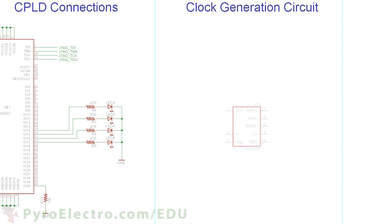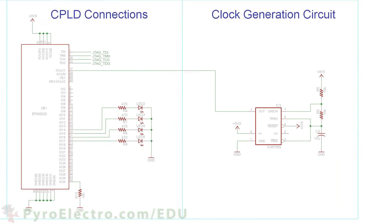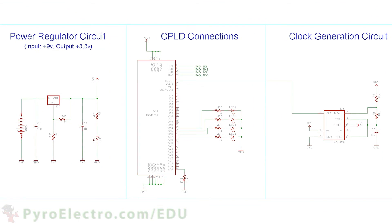The clock generation circuit is an ICM 7555 timer module that connects to 3.3 volt power and circuit ground. The clock output signal on pin 3 connects to the CPLD's global clock input at pin 37. Then we have two 10 kilohm resistors and a 10 microfarad capacitor which connect from 3.3 volt power to ground, and individually they connect to pins 6 and 7 of the ICM 7555. This completes the hardware schematic that we need to build, so now let's go build this thing.